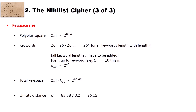Now that we know how the nihilist cipher works, let's look at the key space size — the number of all keys the cipher allows you to choose. We have two parts. First, the number of possible Polybius squares: you can generate 25 factorial arrangements, since you have 25 positions with 25 different letters to assign. This is 25 factorial, which is about 2 to the power of 83.6 different Polybius squares.